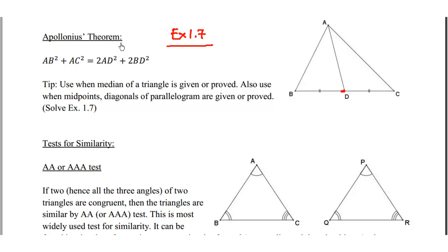Then we apply the Apollonius theorem. It states that AB square plus AC square is equal to 2AD square plus 2BD square. So it is something like this: AB square plus AC square is equal to 2AD square, or 2 times the median square, plus 2BD square.